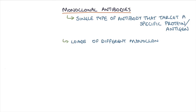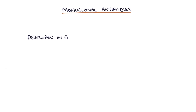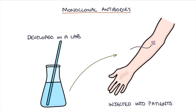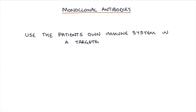There are loads of different monoclonal antibodies that target different proteins, and each monoclonal antibody has its own specific target protein. We can develop these monoclonal antibodies in a lab and then inject them into patients. Once injected, the antibodies travel to their target and activate the immune system to attack that target in the same way that antibodies produced by a person's own B cells would do. In this way, monoclonal antibodies essentially utilize the patient's own immune system in a targeted way that's useful for their particular condition.